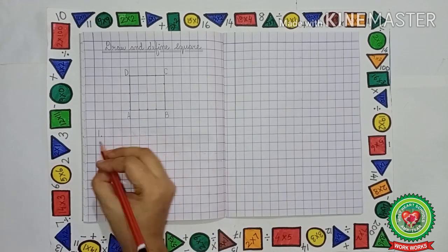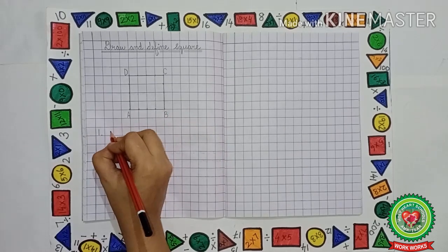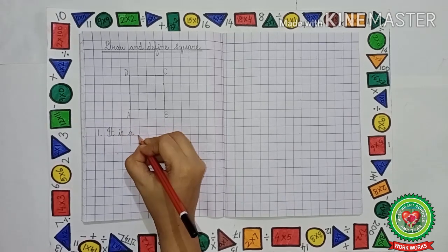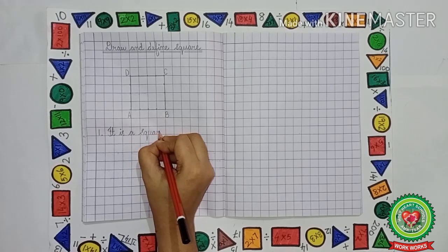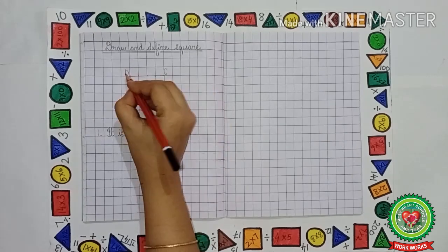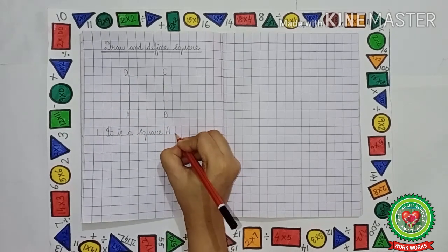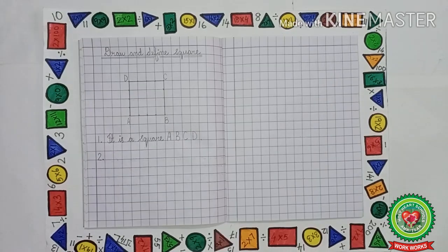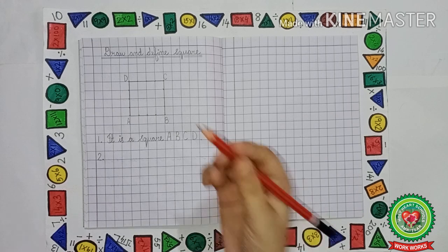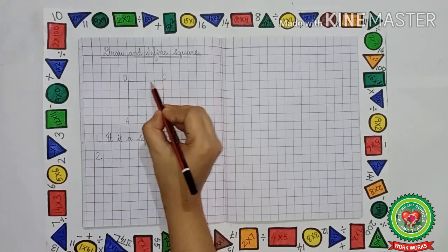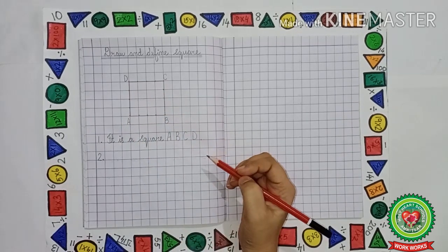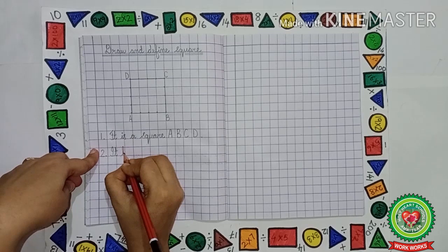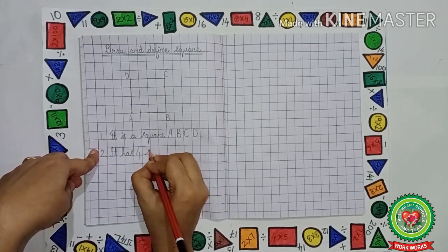Let us start writing the points. The very first point: it is a square ABCD. Next point, we have to write how many sides it has. Square has four sides — AB, BC, CD and DA are the four sides.